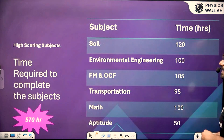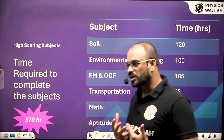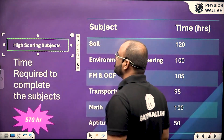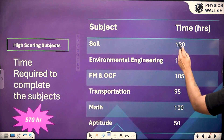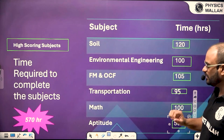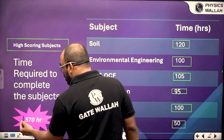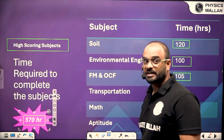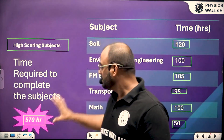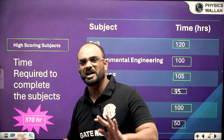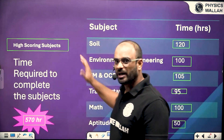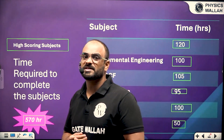Now let us understand how much time is required for each subject and the total time to cover the entire civil engineering syllabus. For high scoring subjects: soil mechanics requires 120 hours, environmental engineering 100 hours, FM 105 hours, transportation 95 hours, mathematics 100 hours, and aptitude 50 hours. The total time to cover high scoring subjects is 570 hours — approximately 600 hours. At 6 hours per day, that is approximately 100 days.